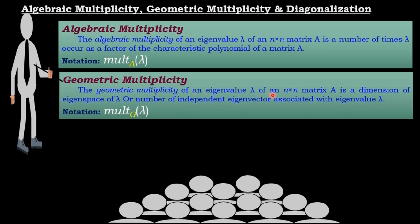The geometric multiplicity of an eigenvalue lambda is the dimension of the eigenspace of lambda, or the number of eigenvectors associated with eigenvalue lambda. The notation is MULT_G(lambda), where G stands for geometric multiplicity.